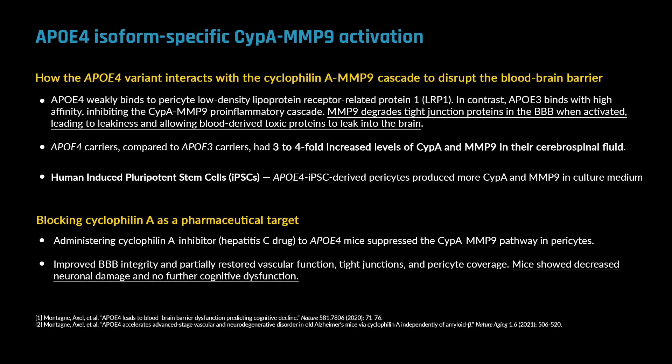It doesn't trigger the cascade of expressing cyclophilin A, which will release MMP9 — matrix metalloproteinase 9. And MMP9 does two things you don't want. Number one is disrupting the tight junctions between the endothelial cells. All the endothelial cells are tightly close to each other with tight junctions in between, and MMP9 will eat up those tight junctions, creating gaps — that's what we call breakdown of the barrier. So you're going to start to see leakage.